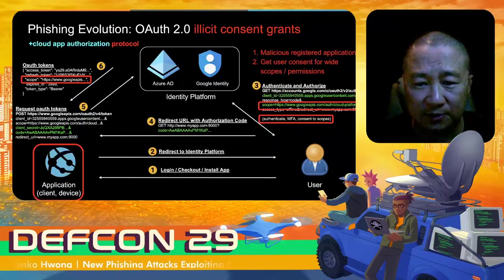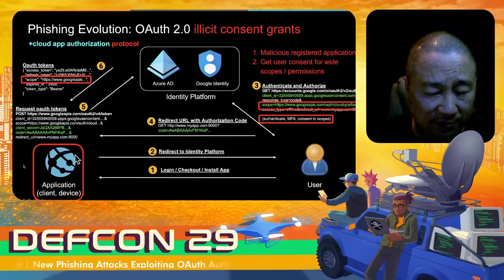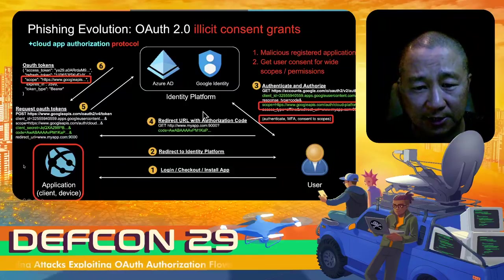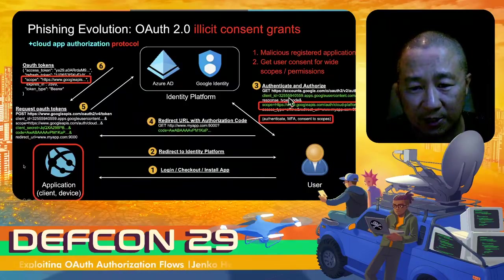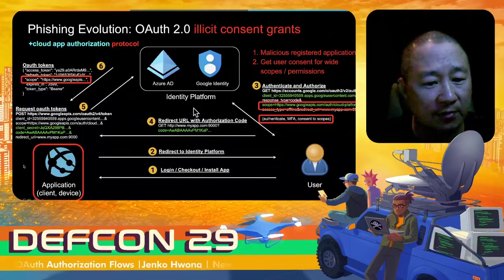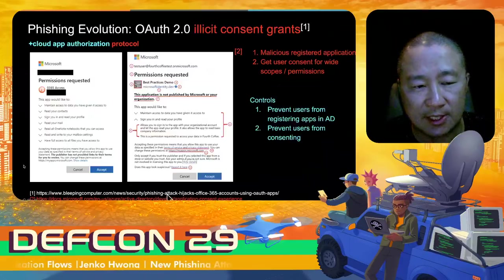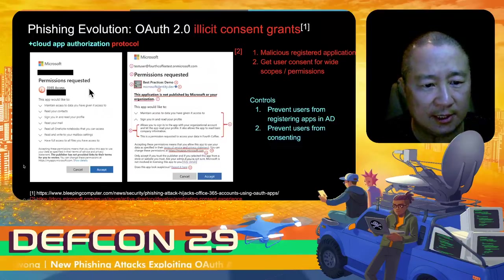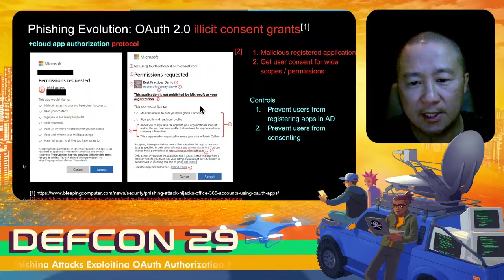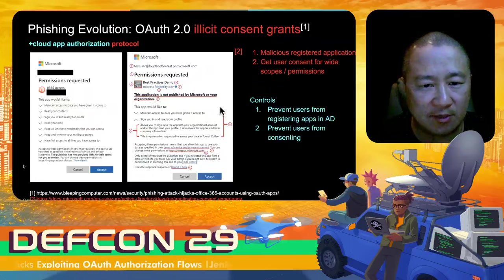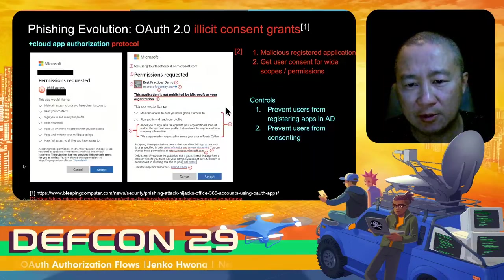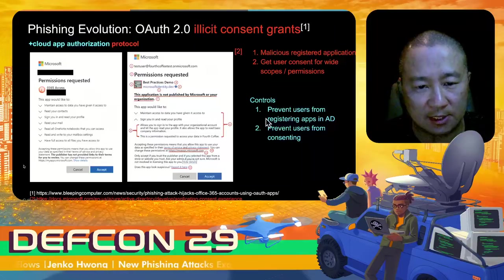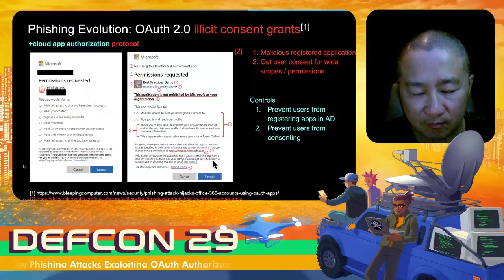If the attacker can get the user to click, they'll approve these broader scopes and OAuth tokens will be created. The tokens get pushed through a redirect URL to the application. From a victim's perspective, they either have to identify that it's a fake application, or an IT administrator needs to prevent users from clicking and approving these app requests. The controls include administrators watching the network, preventing users from registering fake apps in AD, and preventing users from consenting — changing the flow so they're not presented with an accept button.